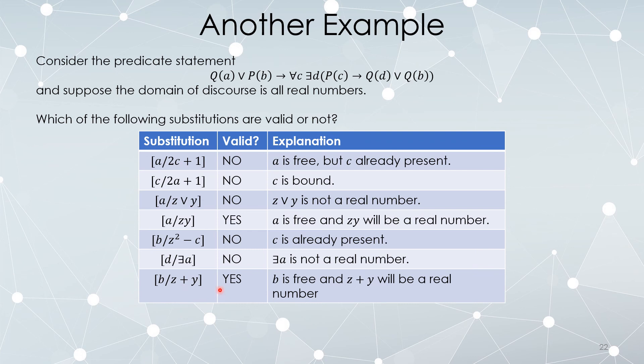Finally, can I replace every instance of B with Z plus Y? Absolutely — B is a free variable, and Z plus Y is a real number once you make a specific choice of constants. This is a legitimate term, so this one's fine.